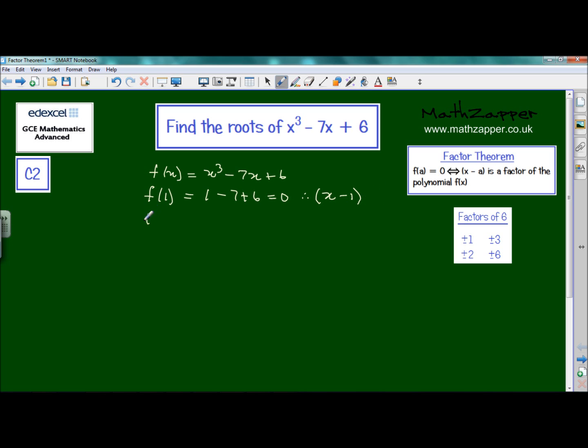So now we'll try f(2). We've tried f(1). And that is now going to give us 2³ is 8, minus 2 × 7, which is 14, plus 6. And again, that gives the answer 0. So we can therefore say that 2 is a root, and therefore the factor from that root would be (x - 2).